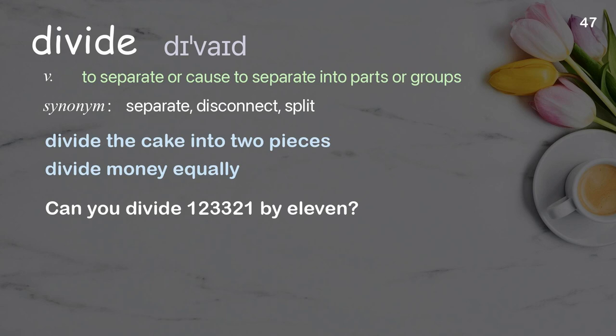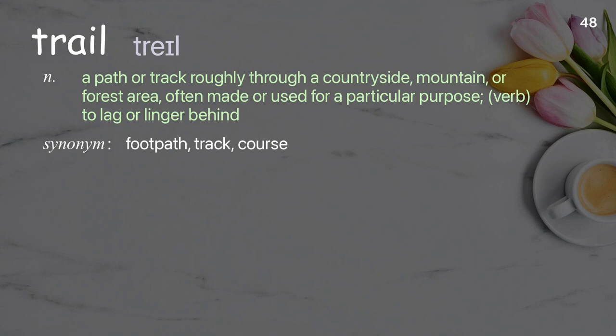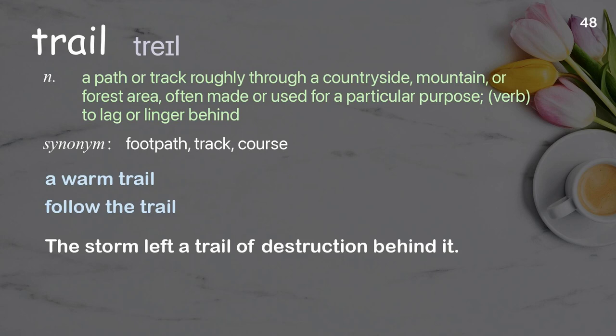Trail: a path or track roughly through countryside, mountain, or forest area, often made or used for a particular purpose; verb, to lag or linger behind. Examples: a warm trail, follow the trail. The storm left a trail of destruction behind it.